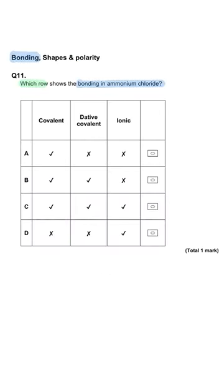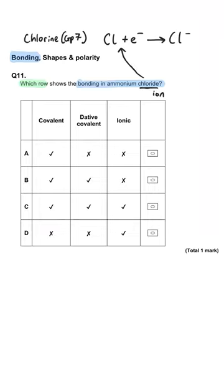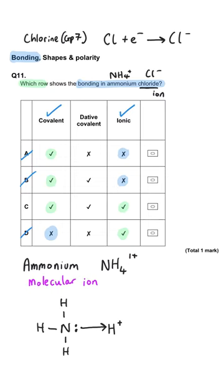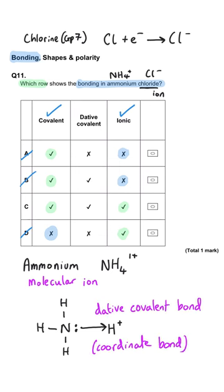Which row shows the bonding in ammonium chloride? Starting with the chloride: chlorine gains an electron to become a chloride ion, so there is ionic bonding — this rules out A and B. Ammonium is the positive ion attracted electrostatically to the chloride ion. Ammonia is NH3 where nitrogen is covalently bonded to three hydrogen atoms. When ammonia uses its lone pair to accept a proton to make NH4+, that forms a dative covalent bond. So the correct answer is C — we have all three types of bonding. That's the end of this video. I hope it was useful. Bye.